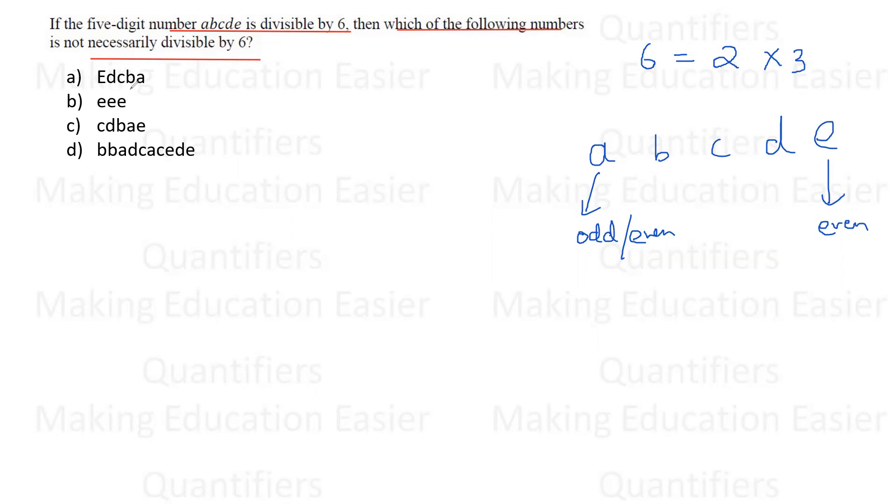Now students, if you look at the first option, they have written the number in the reverse order. So if they've written the number in the reverse order, can I say this first digit will definitely be even now? Abhi, hem lho gho nhe discuss ki hai, yeh chiz.